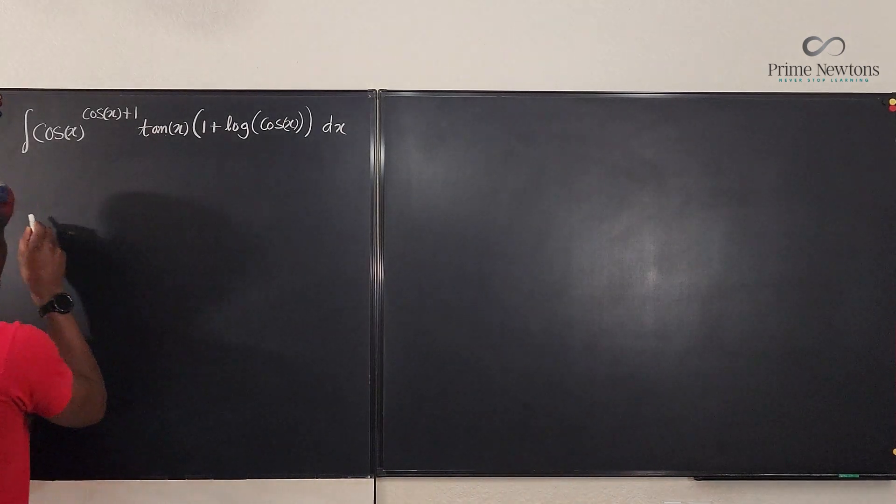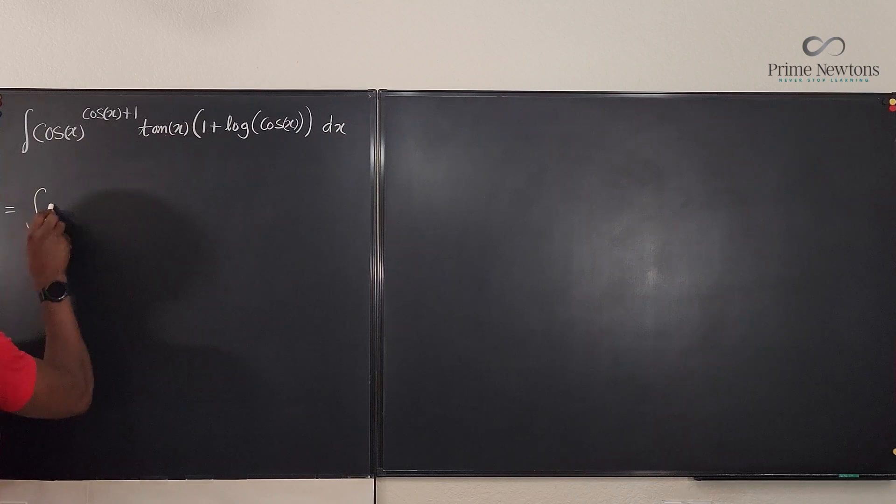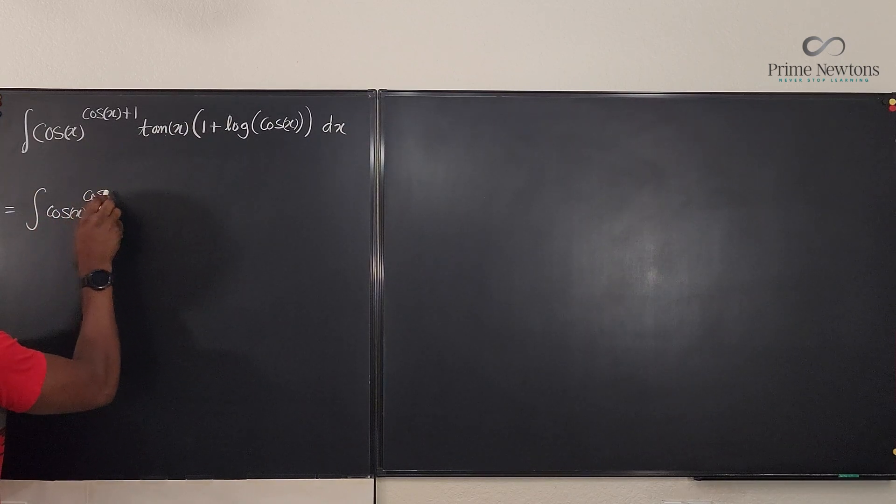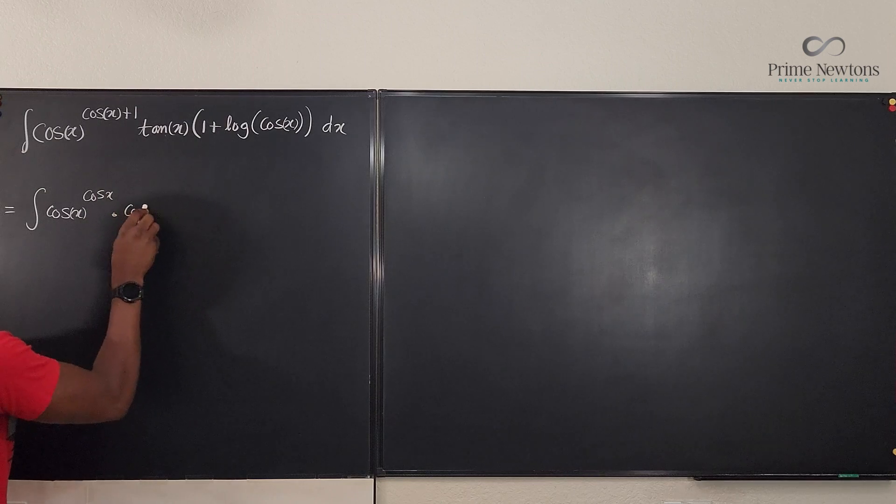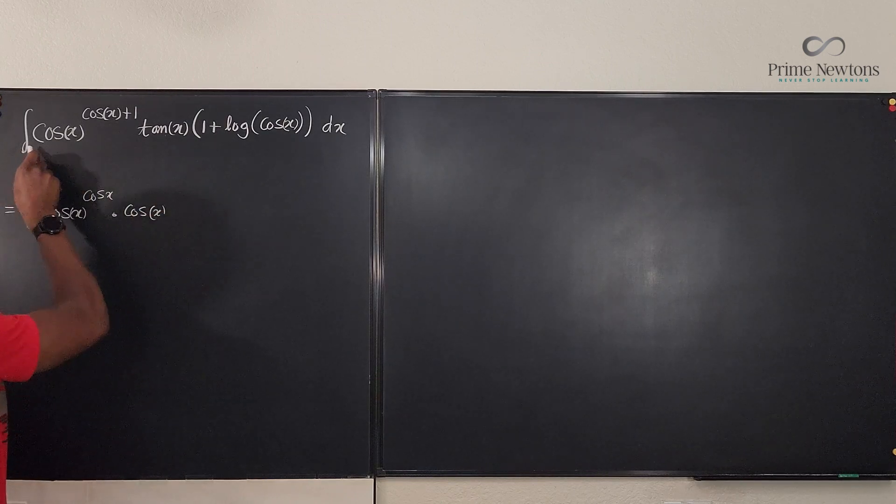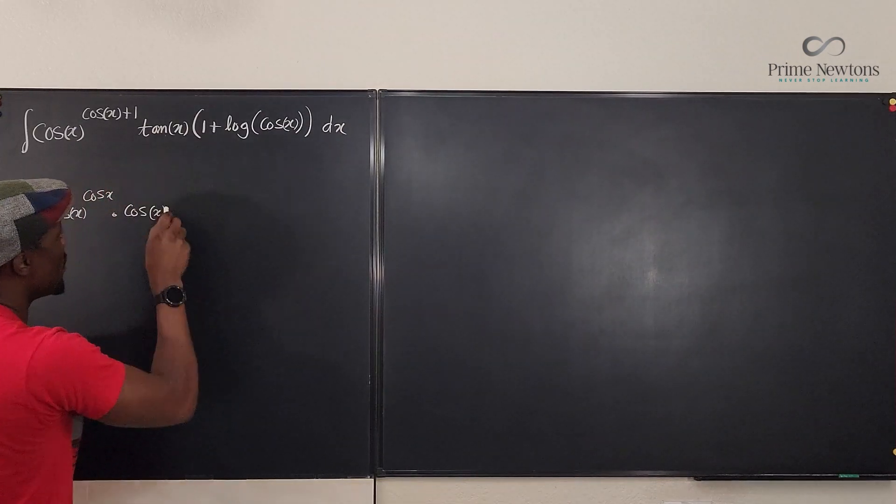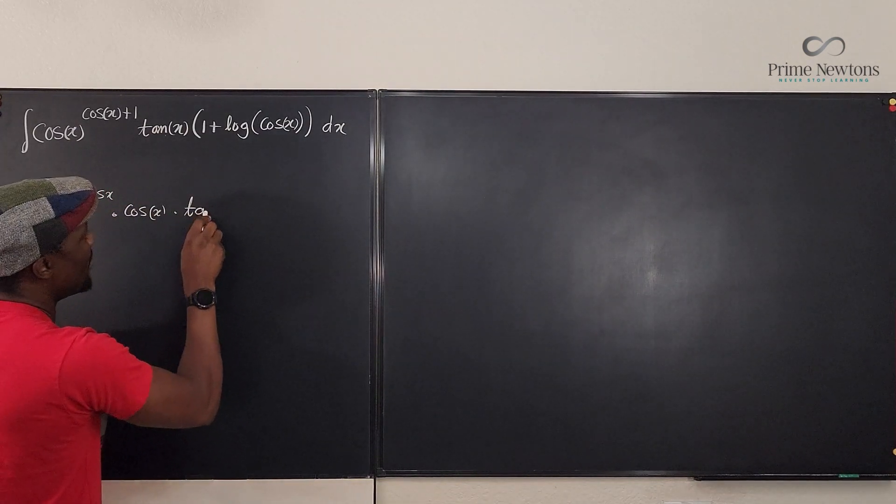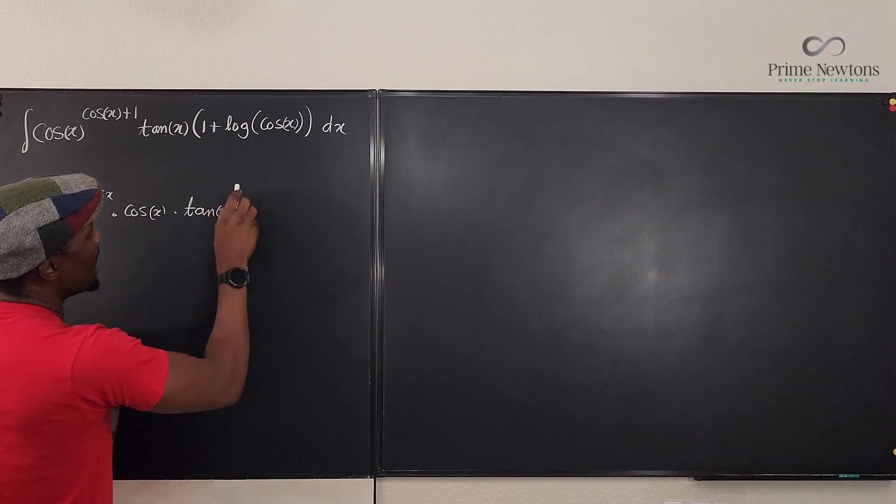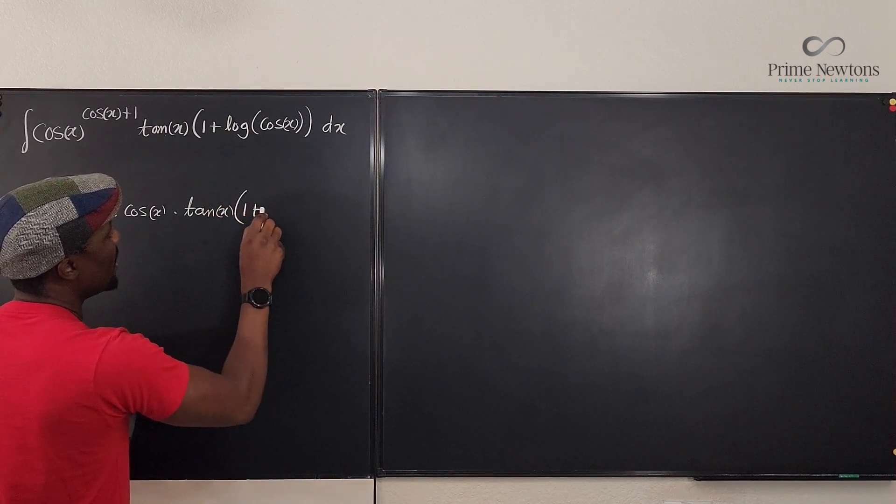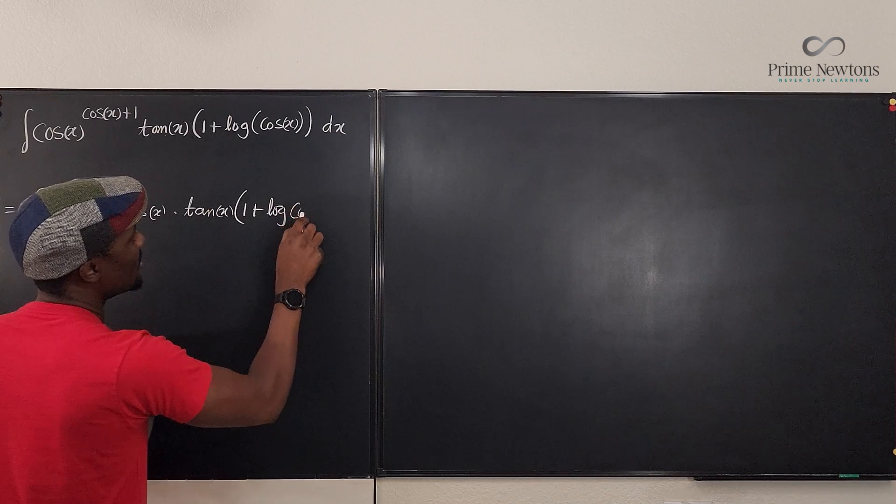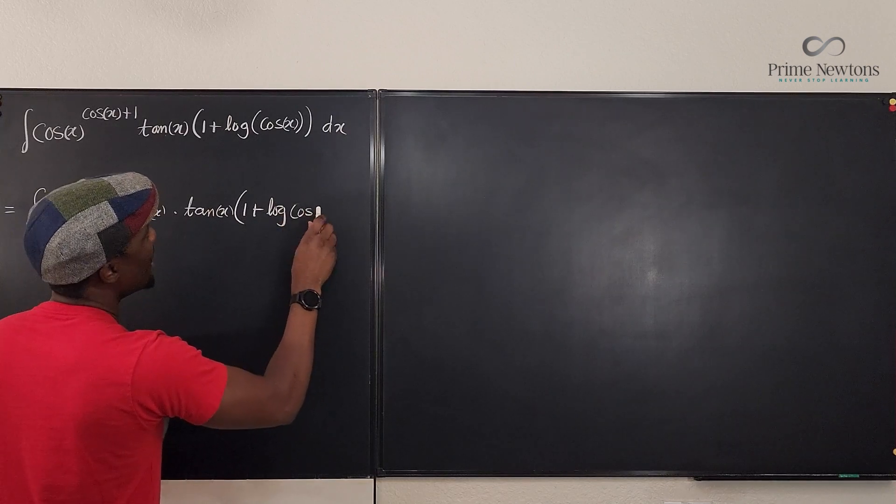We're going to say that this is equal to the integral of cosine x raised to power cosine x times cosine x. So I've written this expression as this because that's what it is. And then I'm going to go ahead and multiply by tan x and then multiply by 1 plus the logarithm of cosine x.